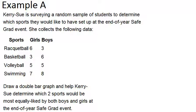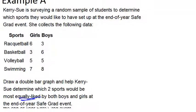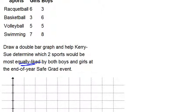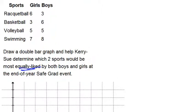Draw a double bar graph and help Carrie Sue determine which two sports would be the most equally liked by both boys and girls at the end of year safe grad event. To make a double bar graph, the first thing we want to do is set up our four categories and scale our y-axis for frequencies.